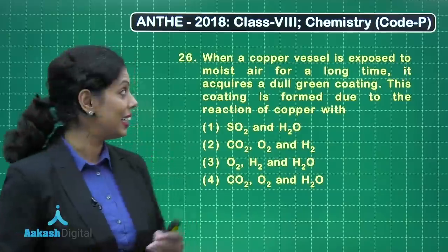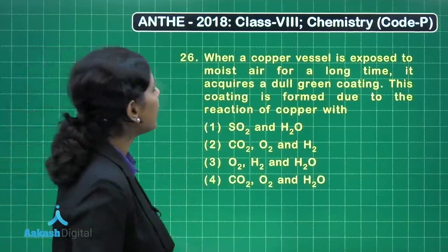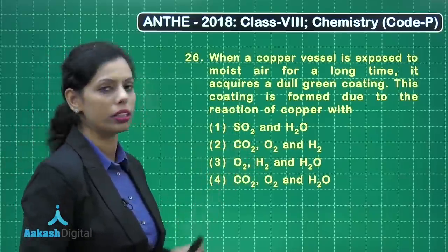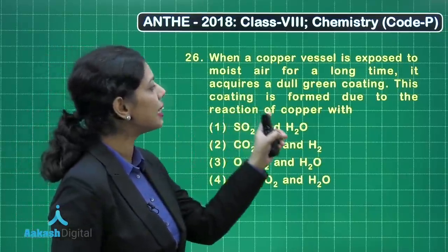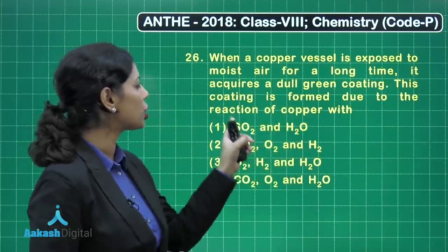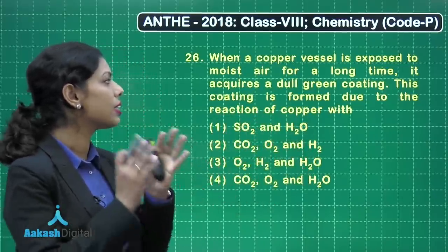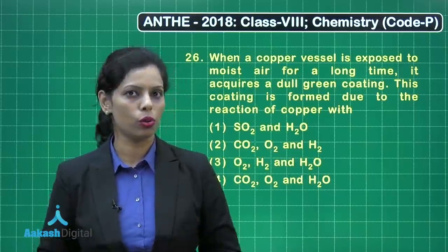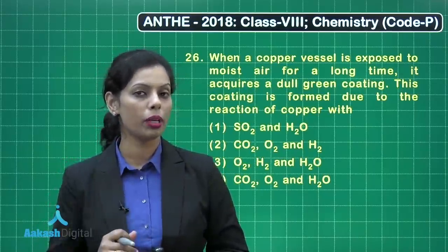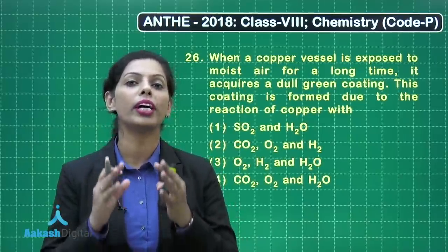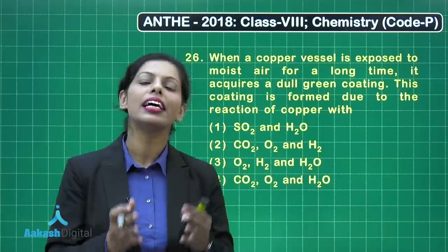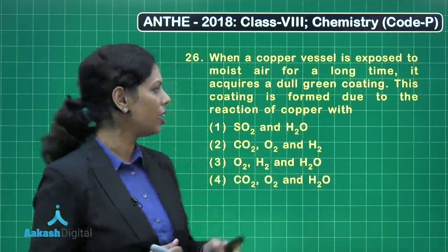Question number 26: when a copper vessel is exposed to moist air for a long time, it acquires a dull green coating. This coating is formed due to the reaction of copper with certain atmospheric gases. In the case of copper corrosion, a green colored coating forms over the copper article due to carbon dioxide, moisture, and oxygen.